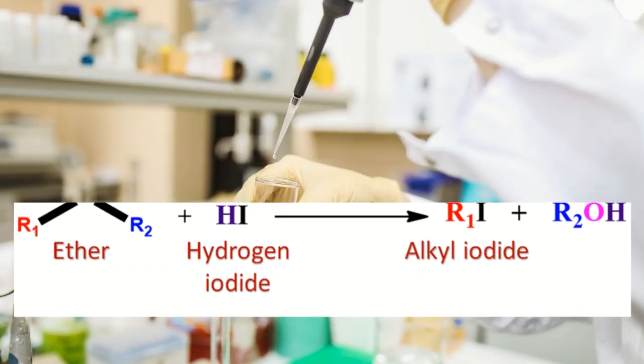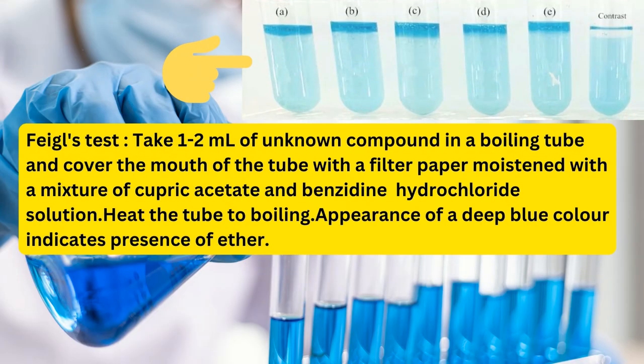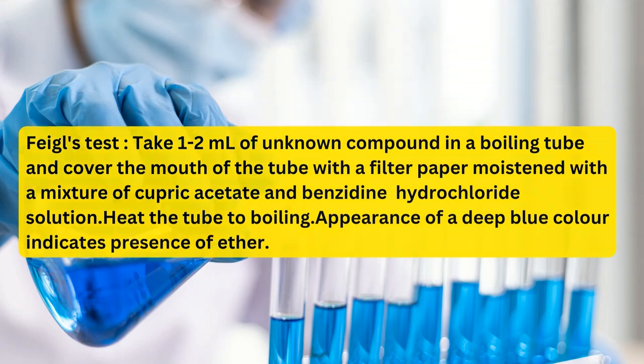Number 2: Feigl's test. Add 1–2 milliliters of solution in a boiling tube and cover the mouth of the tube with a filter paper moistened with a mixture of cupric acetate and benzidine hydrochloride solution. Heat the tube to boiling. A deep blue color indicates the presence of ether.